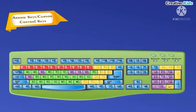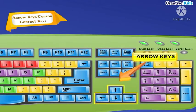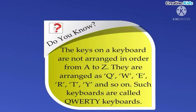Arrow keys are cursor control keys. These keys are used to control the movement of the cursor on the monitor. Do you know, the keys on a keyboard are not arranged in order from A to Z? They are arranged as Q, W, E, R, T, Y and so on. Such keyboards are called QWERTY keyboards.